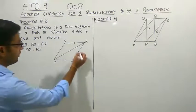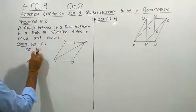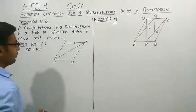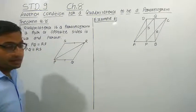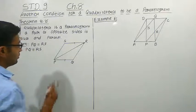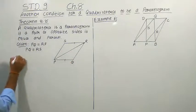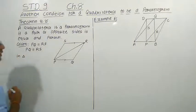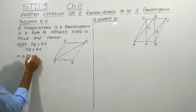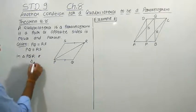We have given that one pair of opposite sides is equal and parallel. We have to prove that PQRS is a parallelogram. Here we consider two triangles: triangle PQR and triangle SRP.